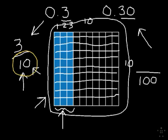This part right here, I'm going to go ahead and circle it in yellow. This part right here is not three tenths anymore. It's thirty hundredths.